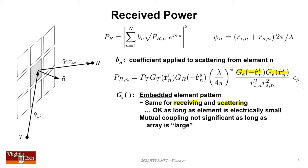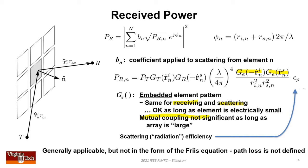I'm assuming the embedded element pattern is the same for every element, meaning mutual coupling is not significant. This is safe as long as the surface is large. Epsilon sub P is an efficiency term describing loss internal to the element scattering process. There is nothing controversial about this derivation requiring only undergraduate electromagnetics. Although quite general, it's not in the form of the Friis equation, so we need to extract the path loss factor.